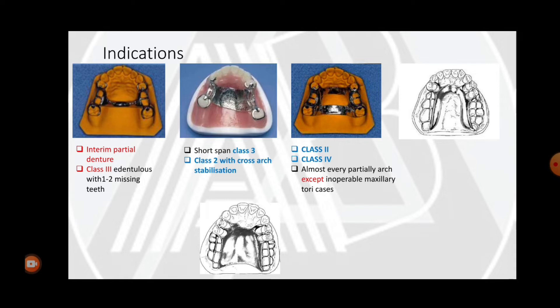The anterior-posterior palatal strap, or closed horseshoe type, is used in Class 2 and Class 4 cases and is almost used in every partially edentulous arch except inoperable maxillary torus cases.